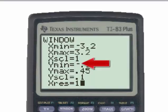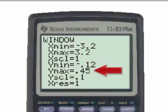Input the other values very carefully. For the y minimum, be sure to enter the negative 0.12. For the y maximum, 0.45. The y scale, 0.1. And finally, the x resolution equal to 1.